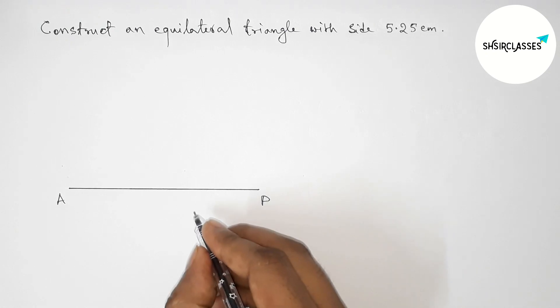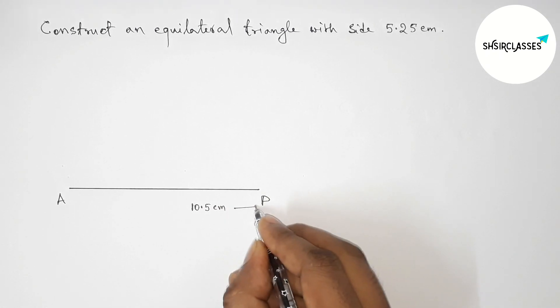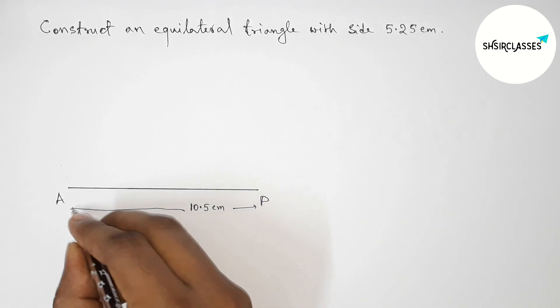Next taking here point A and here point P. So AP, that is a 10.5 centimeter line segment.